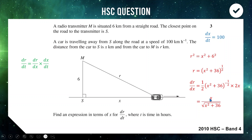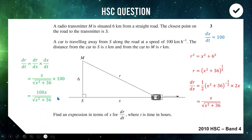To finish off, we multiply dr/dX by dX/dt: dr/dt = (X / √(X² + 36)) × 100 = 100X / √(X² + 36). That right there is our full-marks answer for 3 marks in the 2010 Band 4 HSC question.